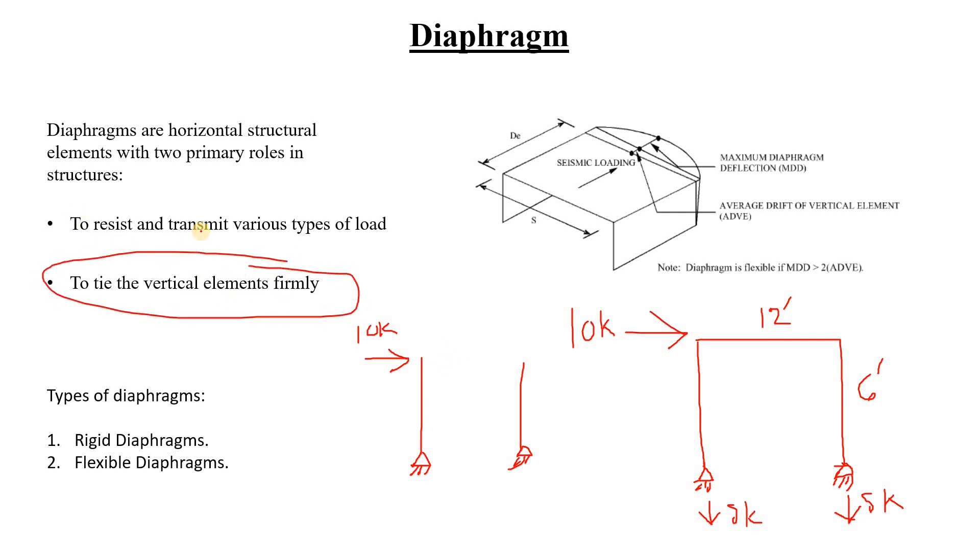That is covered in to resist and transmit various types of loads. Let's say this is a 10k lateral load. Since there is no beam there, what is going to happen is that the 10 kip lateral load is going to give a 10 kip reaction in the lateral formation as well. There are not going to be any vertical loads.